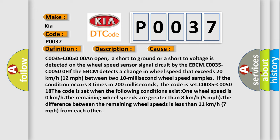One wheel speed is 0 km/h. The remaining wheel speeds are greater than 8 km/h (5 mph). The difference between the remaining wheel speeds is less than 11 km/h (7 mph) from each other.